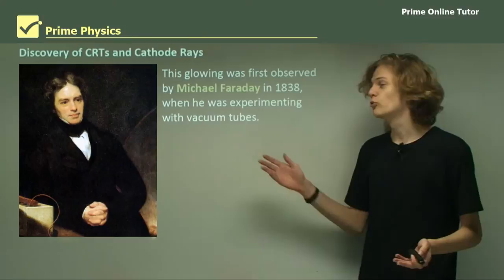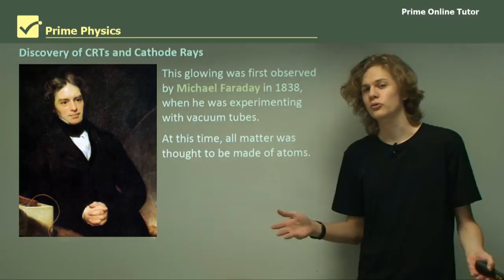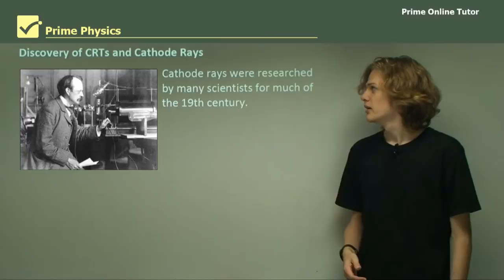Now this glowing was first discovered in 1838 by Michael Faraday. He was experimenting with vacuum tubes at the time. All matter at this time was thought to be made of atoms, so no one had any idea what electrons were and no one could tell what the cathode rays were. So the invisible beams of electrons coming from the cathode were named cathode rays because they came from the cathode.